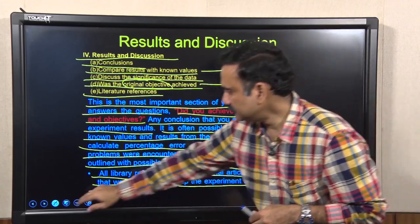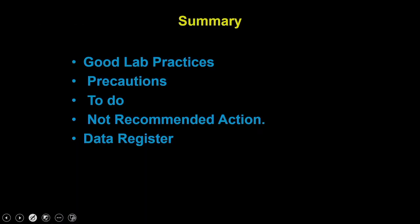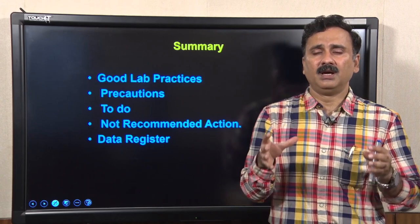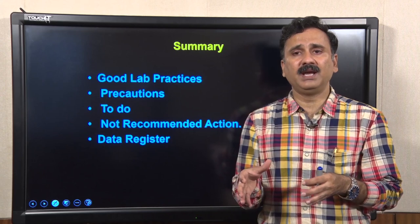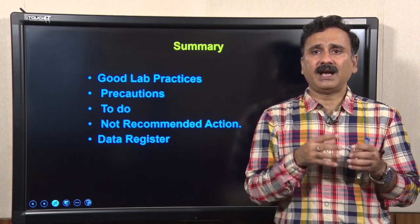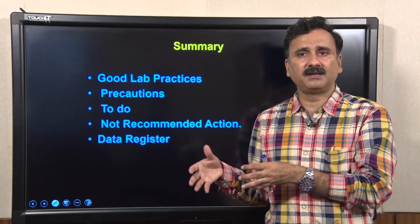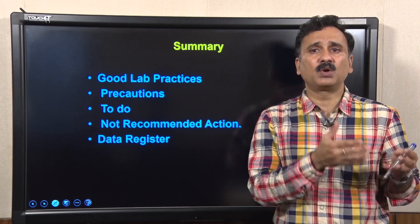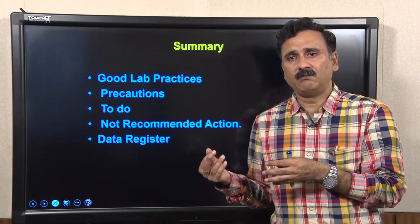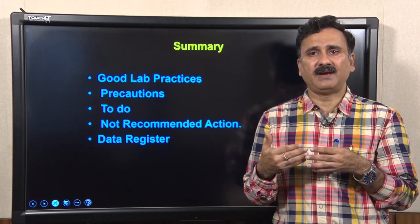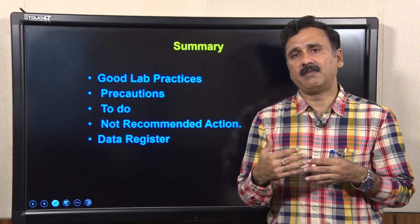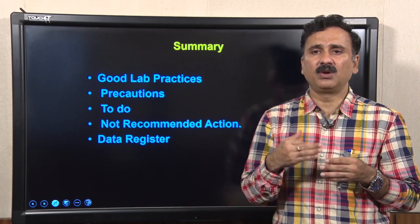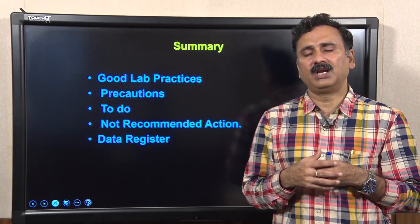In summary, we have discussed good lab practices: how to conduct yourself in the lab, what actions and precautions to take, how to handle accidents and fire hazards, what information is required when opening chemicals and how to use that information to avoid exposure and accidents, and finally how to document experiments properly in lab notebooks and what components are required. With this, I would like to conclude my lecture. Thank you.